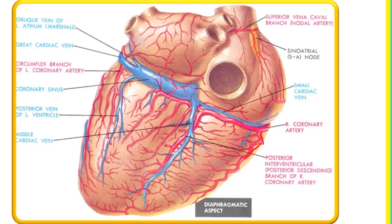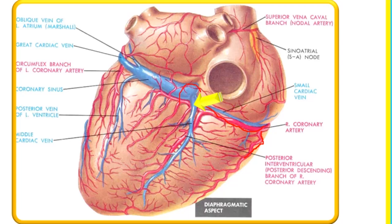After giving off this branch, the right coronary artery will continue into the posterior aspect of the right coronary sulcus and will get to the point called the crux of the heart — the junction of the intra-atrial and intra-ventricular septa. At this point, the right coronary artery will give rise to the atrioventricular nodal branch, which will supply the AV node. So we've seen this artery giving two contributions to the conducting fibers: the SA node and the AV node.